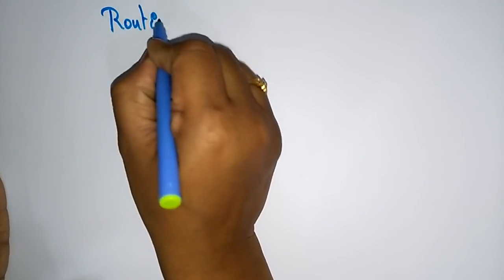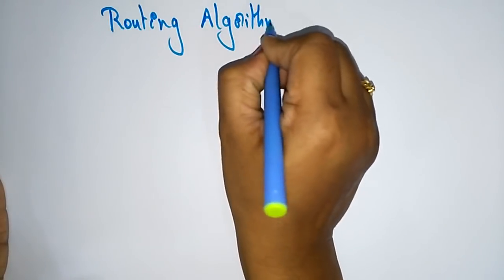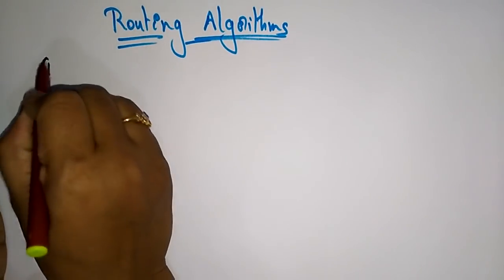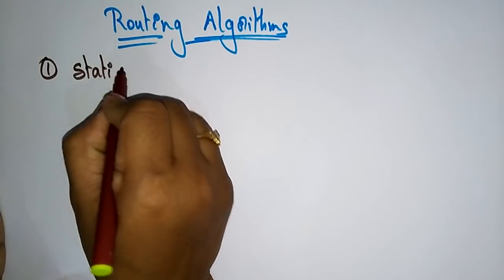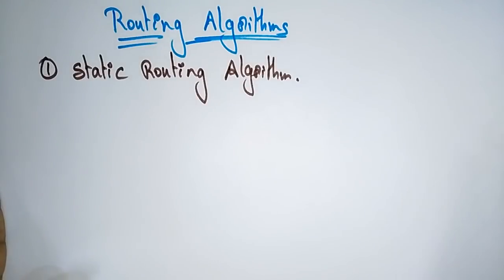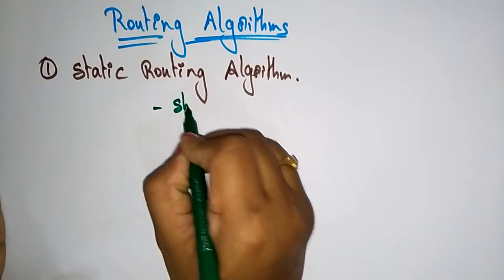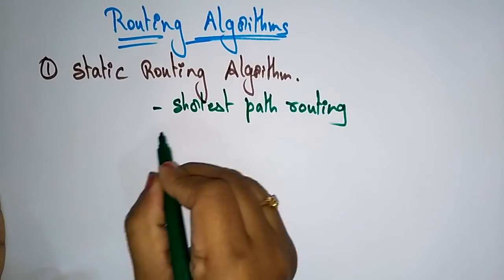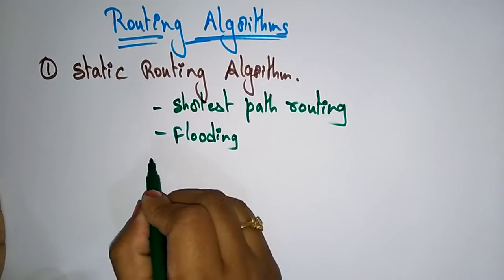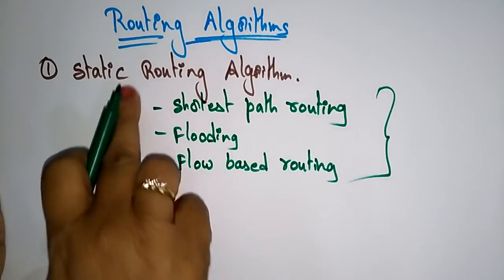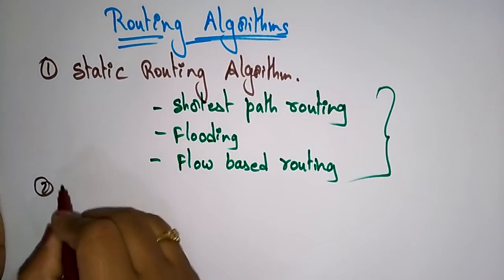Now let's see the different routing algorithms. In the next video I'll explain each and every routing algorithm with an example. The static routing algorithms are: shortest path routing, flooding, and flow-based routing. These three come under the static routing algorithms. Next is the dynamic routing algorithm.